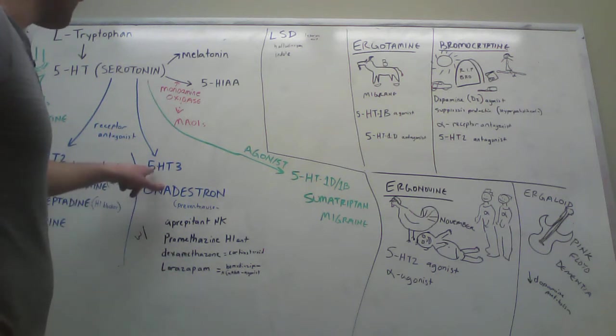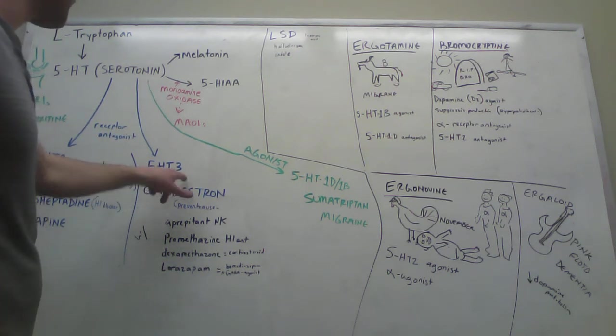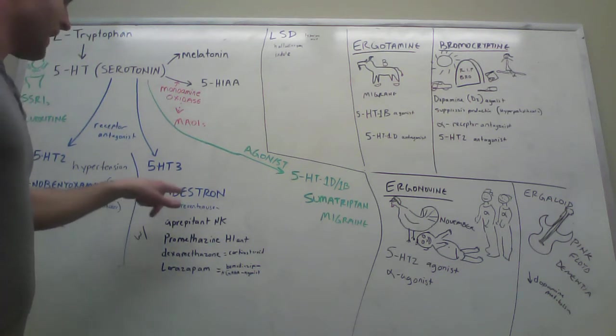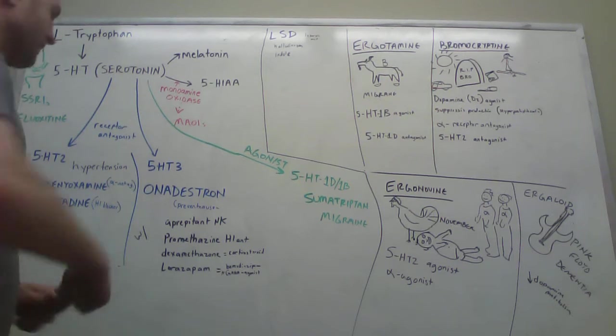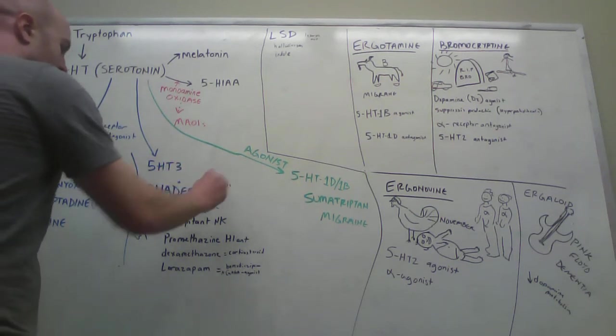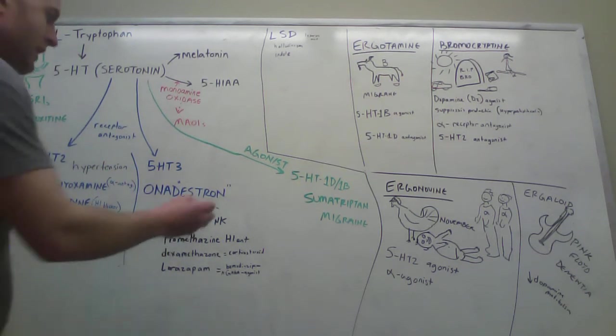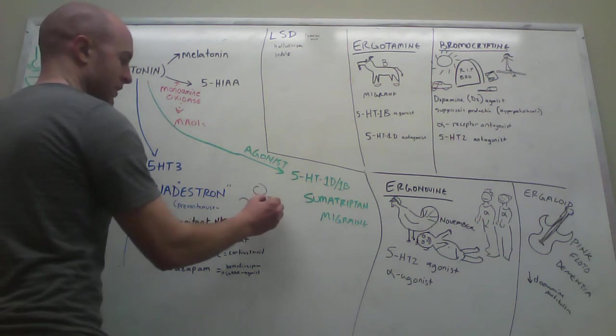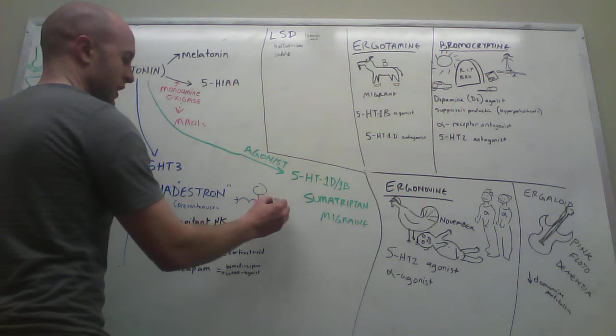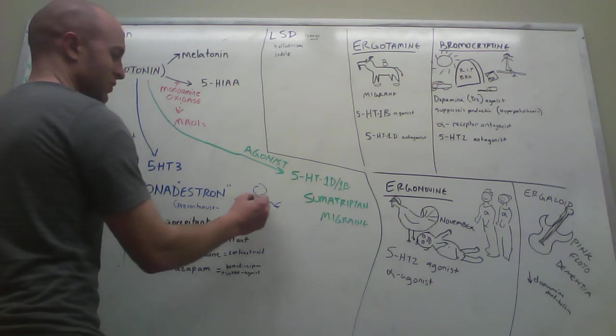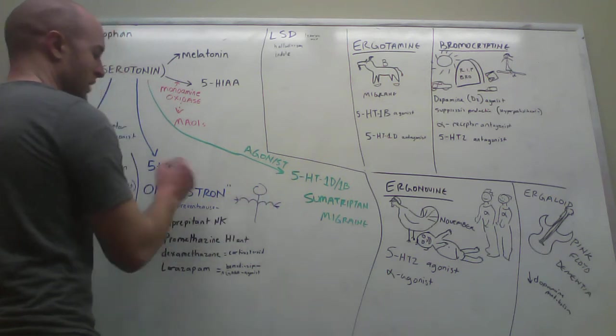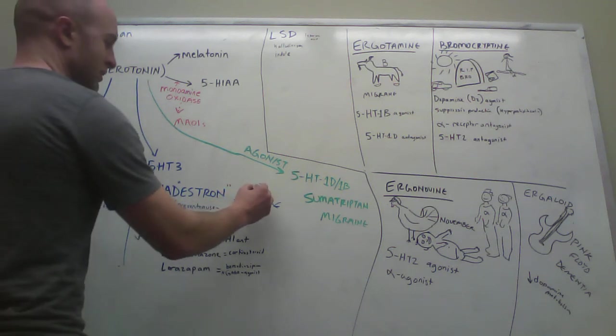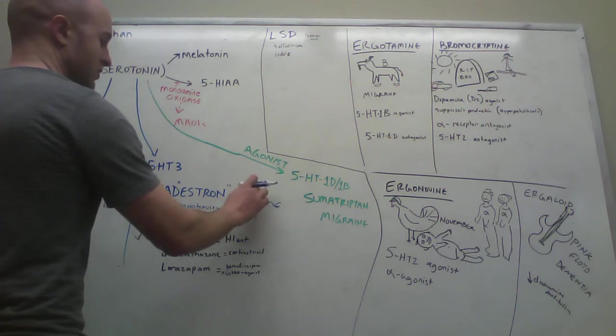Next, you have these 5-HT3 receptor antagonists. The only one he had bolded was ondansetron, but they all end in -setron. I thought maybe you could draw this picture of this guy - he is strong. Those are muscles, those are threes. You remember the 5-HT3? See those threes in there, the muscles. Here's his smile.